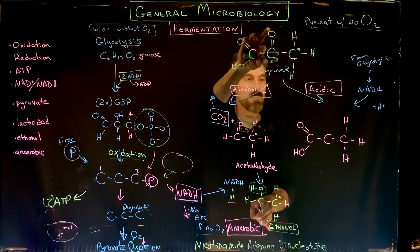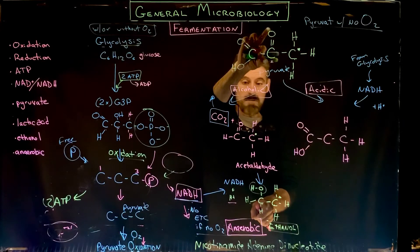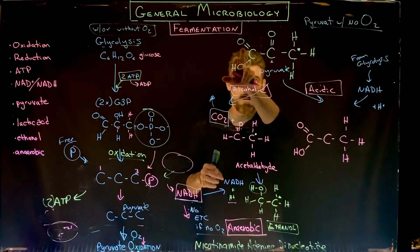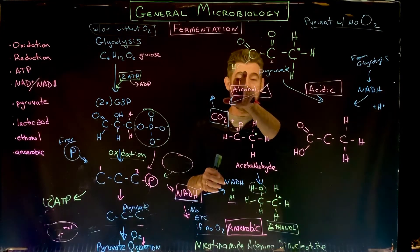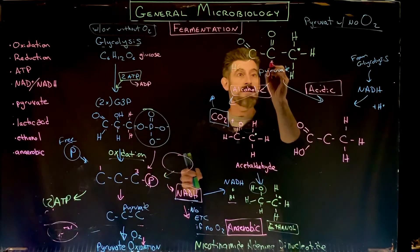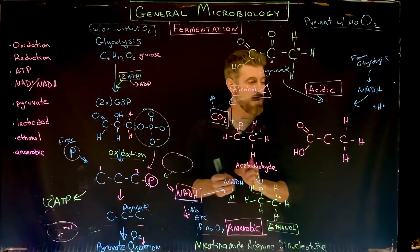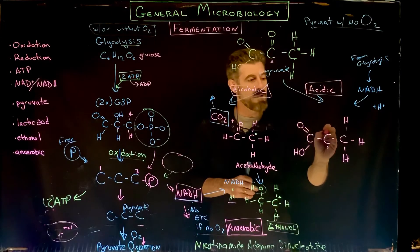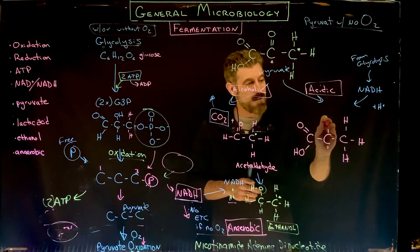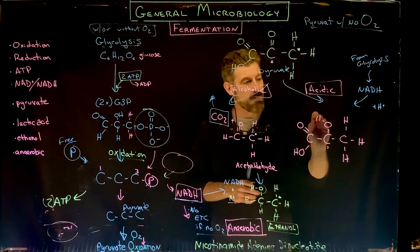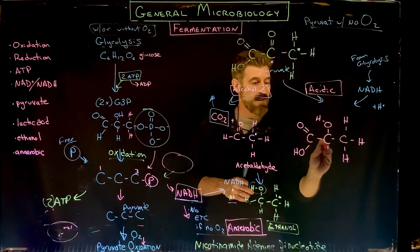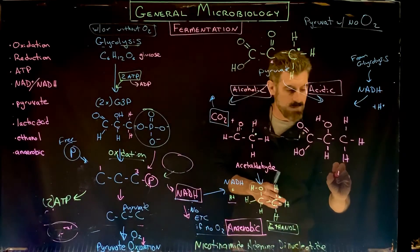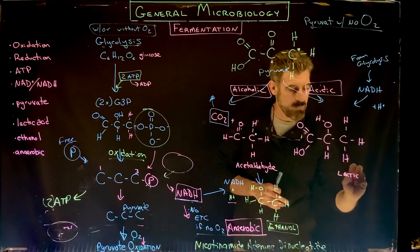In lactic acid fermentation, the middle carbon is modified: the carbon-oxygen double bond is broken and a hydrogen is put in there, and then an additional hydrogen comes in as well. This is now lactic acid. The carboxyl group stays completely unaltered - it stays exactly the same. So the product is lactic acid, formed by reducing pyruvate directly using NADH.